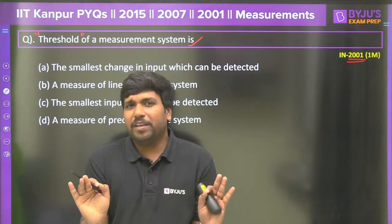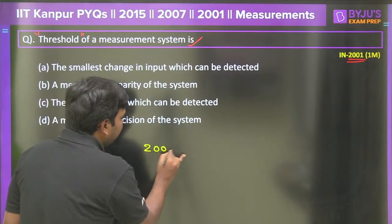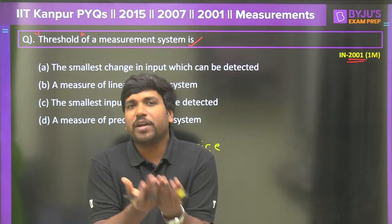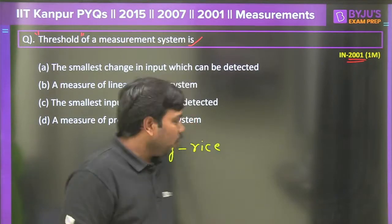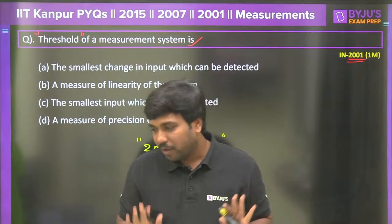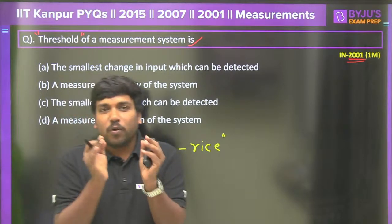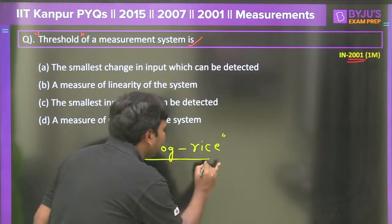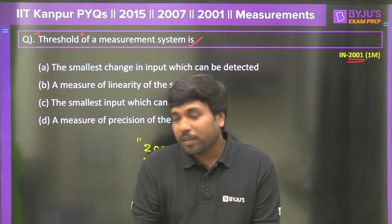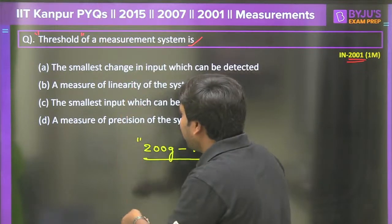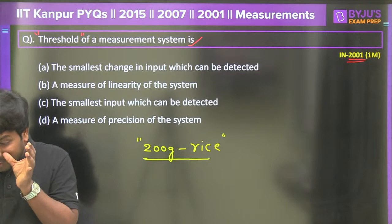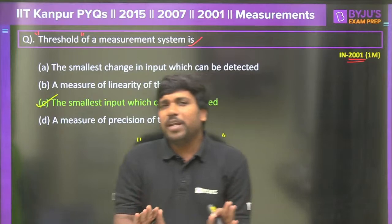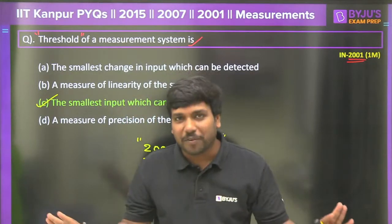Suppose I am a human being who naturally requires some quantity of energy, which comes from food. Say I require every day a minimum of 200 grams of rice to do some work. This minimum amount of intake required to produce the output is considered as a threshold. So, option C — 'minimum input which can give output' — is the correct answer for this question, asked in 2001.